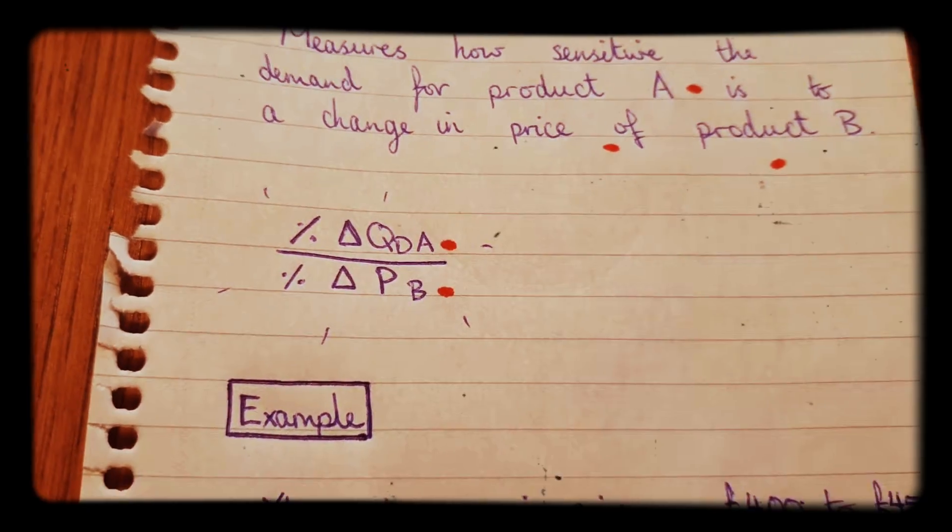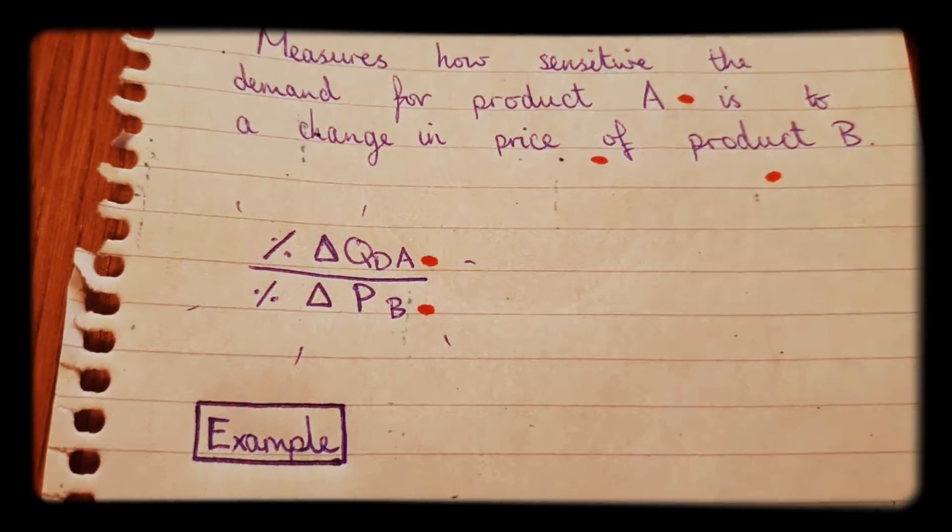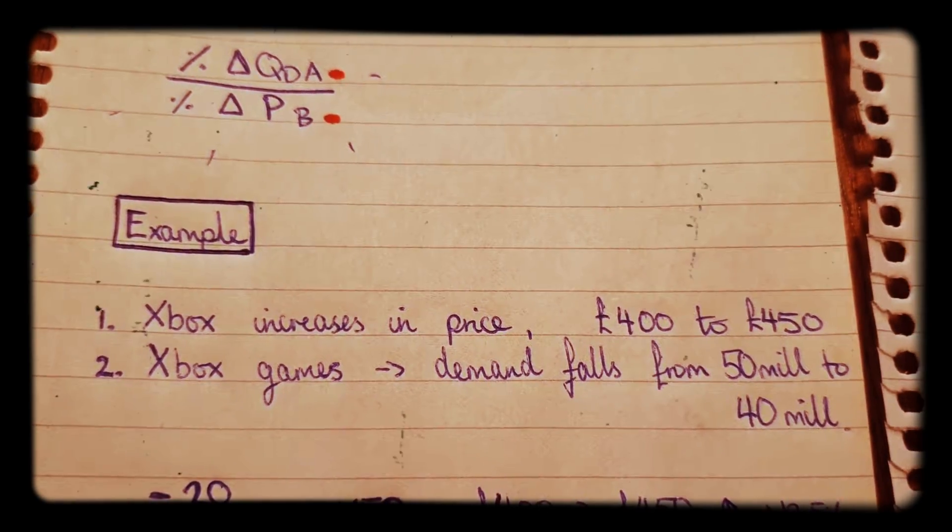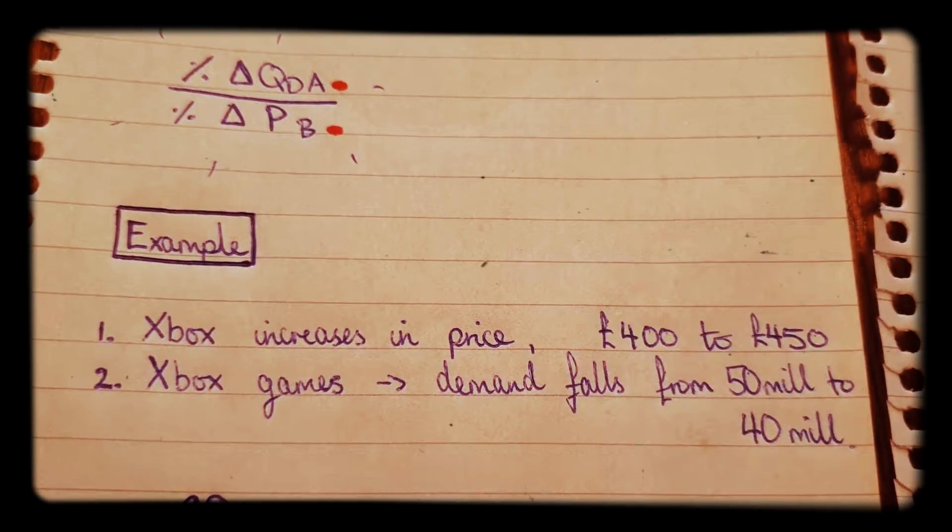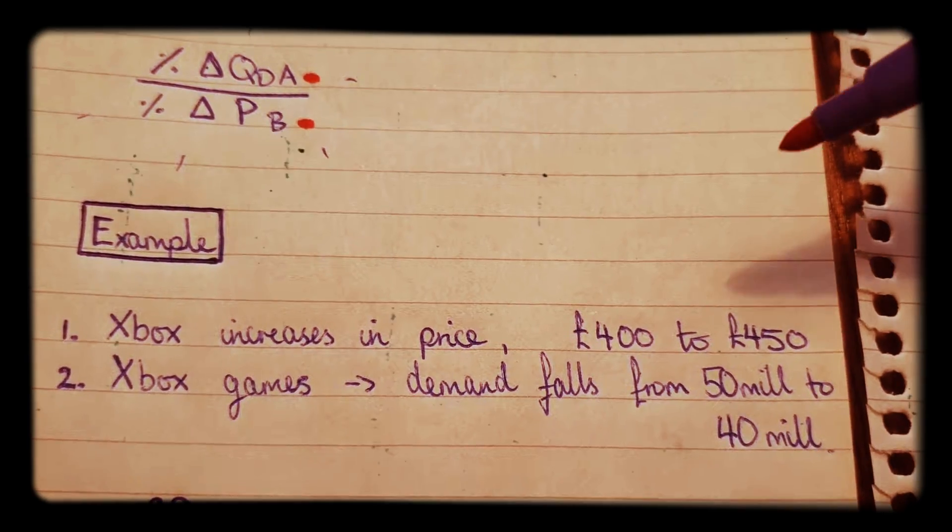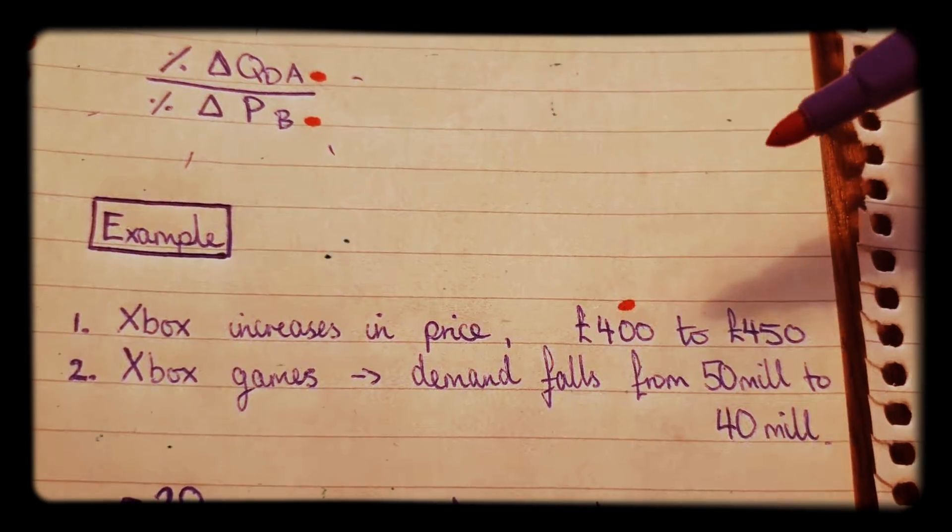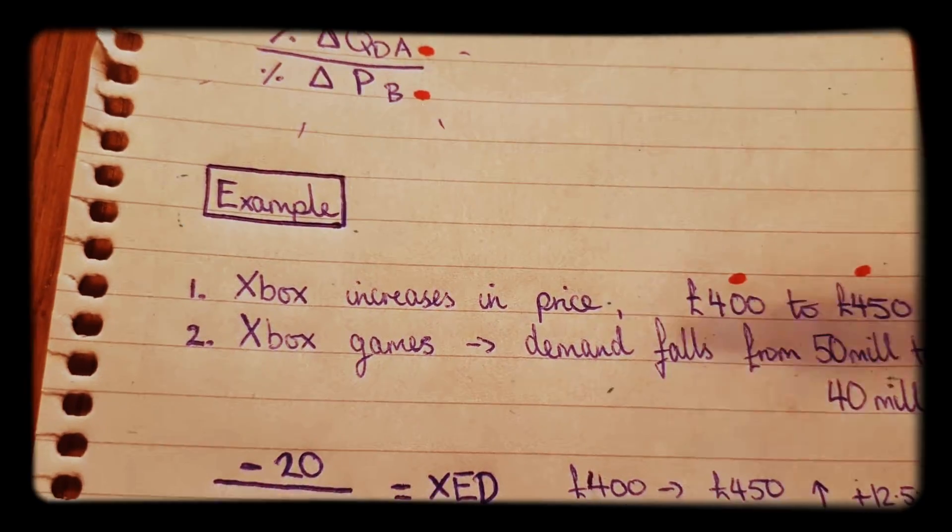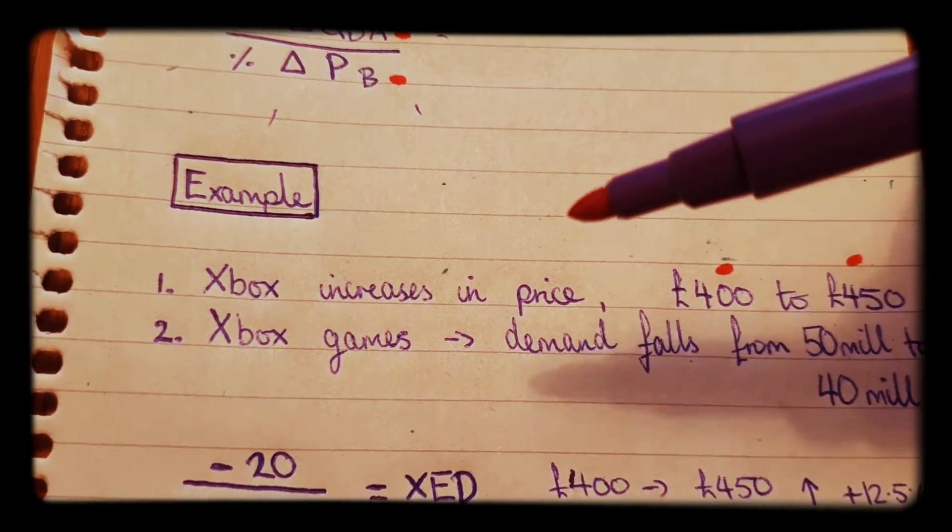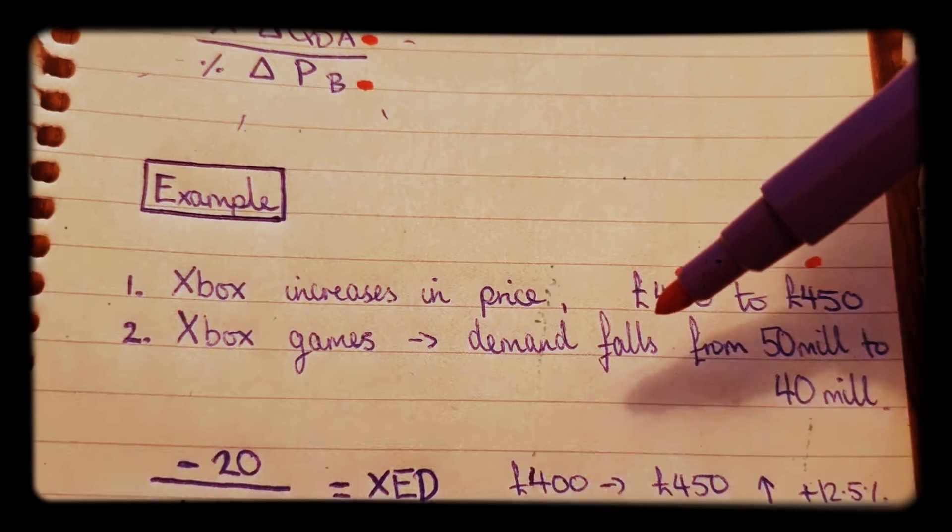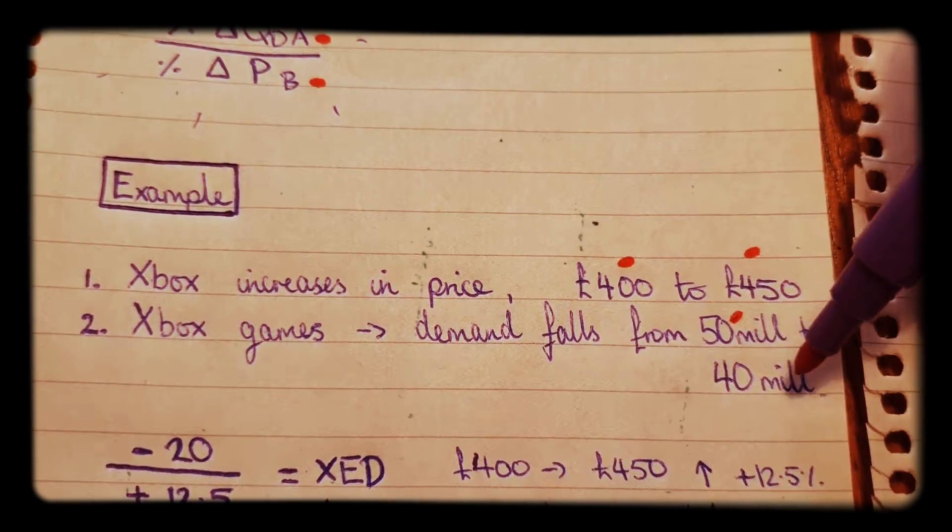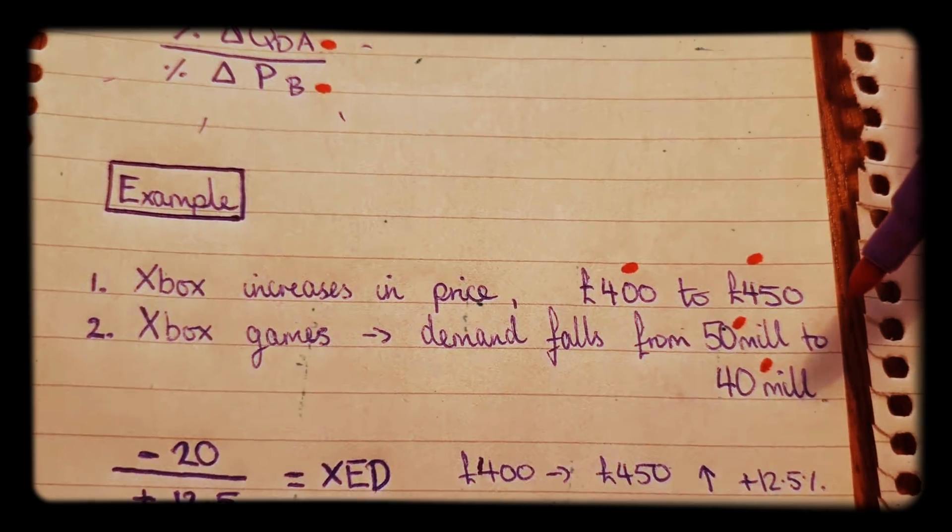Here is an example of how to work it out. In this example, we're talking about Xboxes. If the Xbox increases in price from £400 to £450, and then we see Xbox games as a result, the demand for these games falls from £50 million to £40 million.